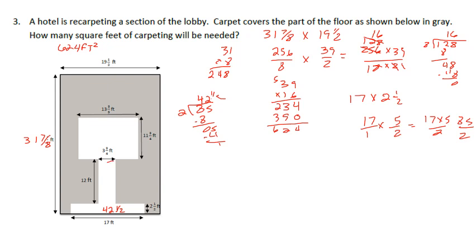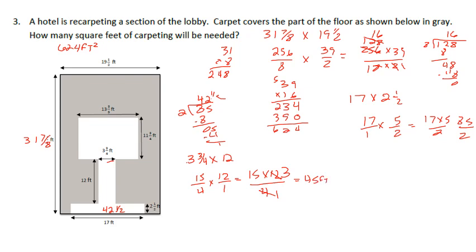The next white area: 3 and 3 fourths times 12. 3 and 3 fourths is 15 fourths, times 12 over 1. Rewriting: 15 times 12 over 4. 4 goes into 4 one time, 4 goes into 12 three times. 3 times 15 is 45 feet squared.